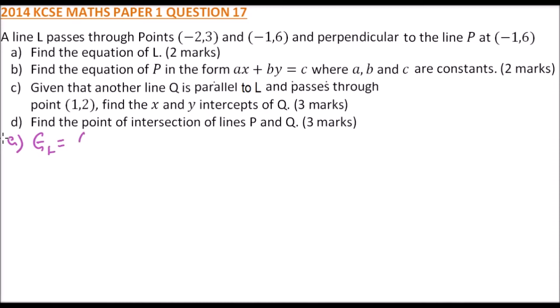Gradient of l equals 6 minus minus 3 divided by minus 1 minus minus 2. That changes to positive, so we have 3 divided by 1 which equals 3. So that is the gradient. Once you get the gradient then you can find the equation.